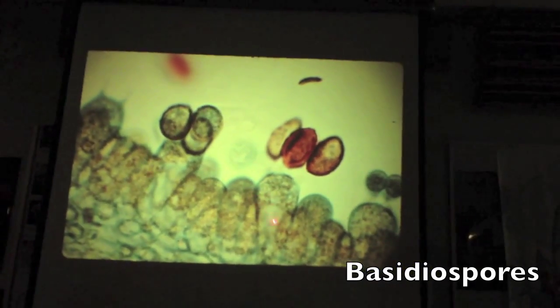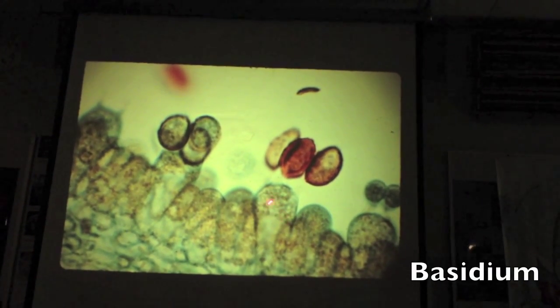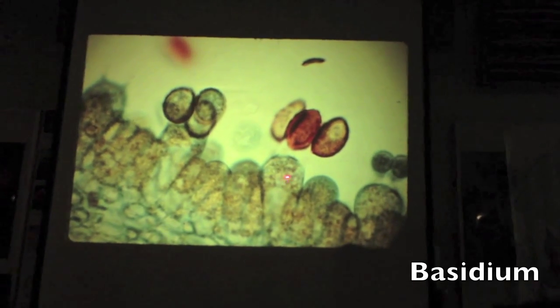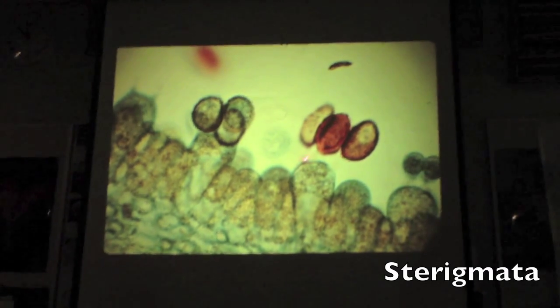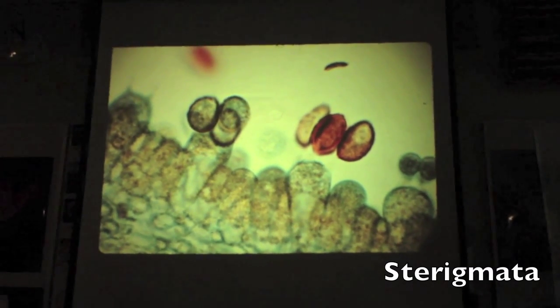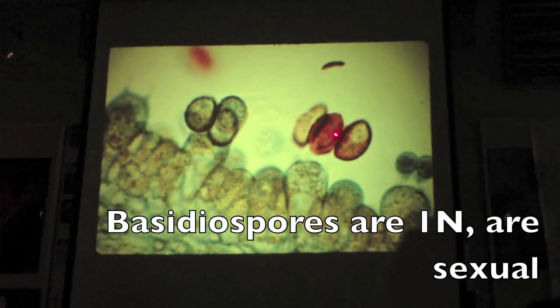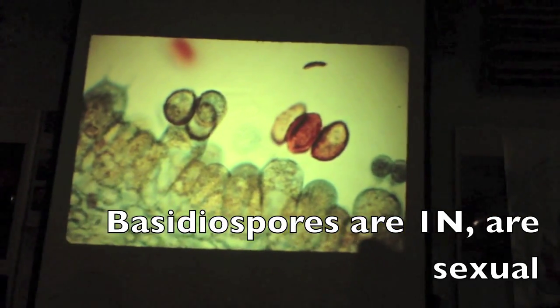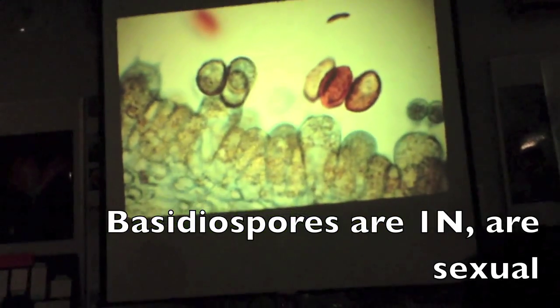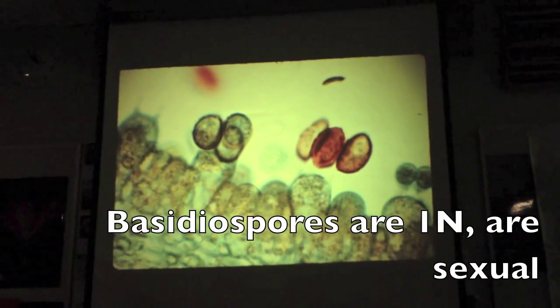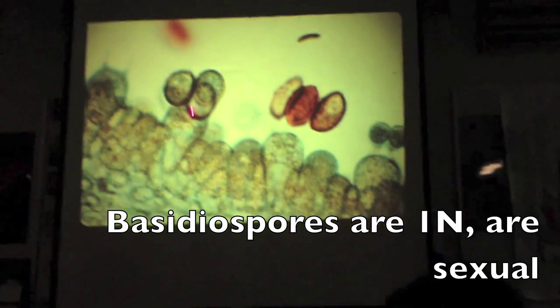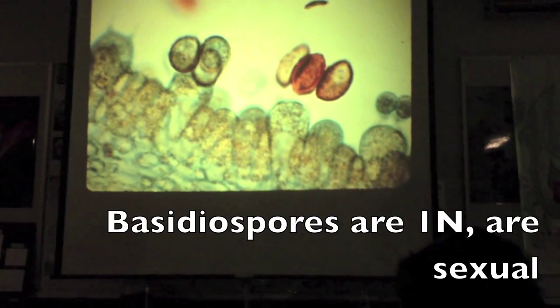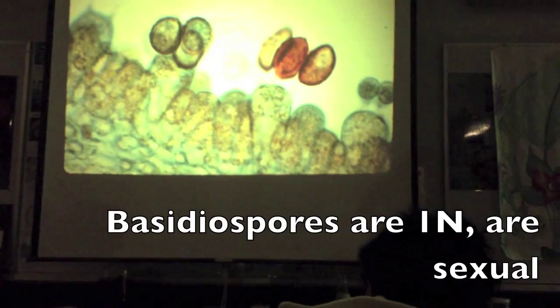Basidiospores — the structure that produces them is a basidium. Those little connectors between the basidium and the spores — kind of hard to see, but here you can see where the spores attach — little spikes. What are those little structures called? Sterigmata. Are these spores haploid or diploid? One end. Are they sexual or asexual? Sexual processes involve fusion and meiosis — asexual is just mitosis. There are four of them, which gives you a hint they are made by meiosis — sexual spores.